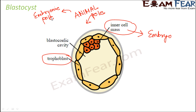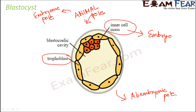So animal pole and embryonic pole refer to the same region. The opposite side is known as the abembryonic pole, sometimes also referred to as the vegetal pole. So this side is the animal or embryonic pole, and the opposite side is the vegetal or abembryonic pole — these are the terms used when we talk about the types of cleavage.